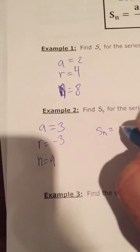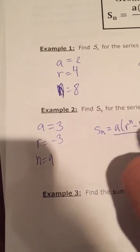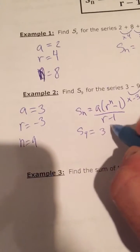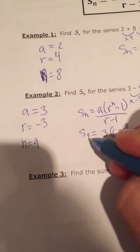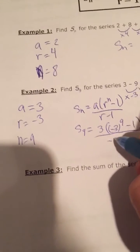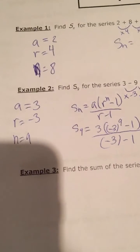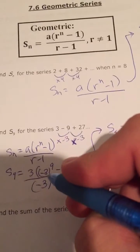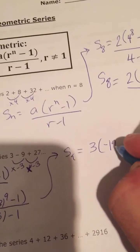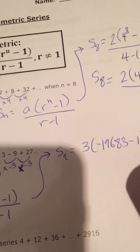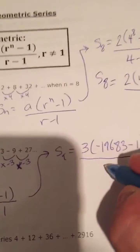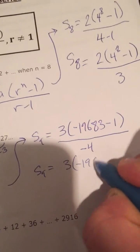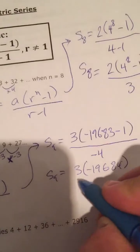We write down Sn equals A times R to the n, minus 1, all over R minus 1. Plugging in our values, the sum of the first 9 terms equals 3 times negative 3 to the 9th power, minus 1, all over negative 3 minus 1. Negative 3 to the power of 9 is negative 19,683, minus 1, all over negative 3 minus 1 which is negative 4. So sum of the first 9 terms equals 3 times negative 19,684 over negative 4.